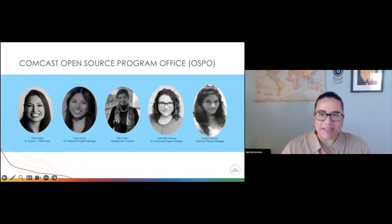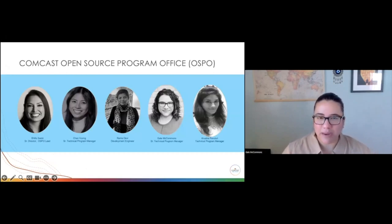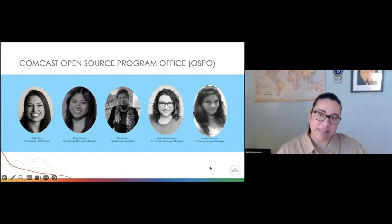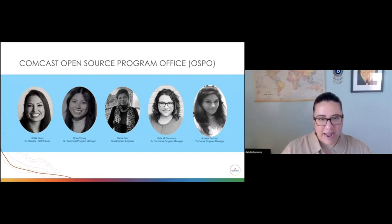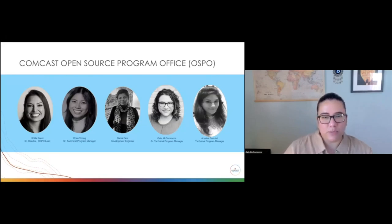A little bit about our team. I am in the Comcast open source program office, the OSPO. The Comcast OSPO was founded in 2017. We're currently a five-person distributed team, distributed globally across Philadelphia, San Antonio, Denver, Chennai, and Silver Spring. We support over 9,000 technologists, over 2,000 project repos on github.com, and over 50 inner source projects.